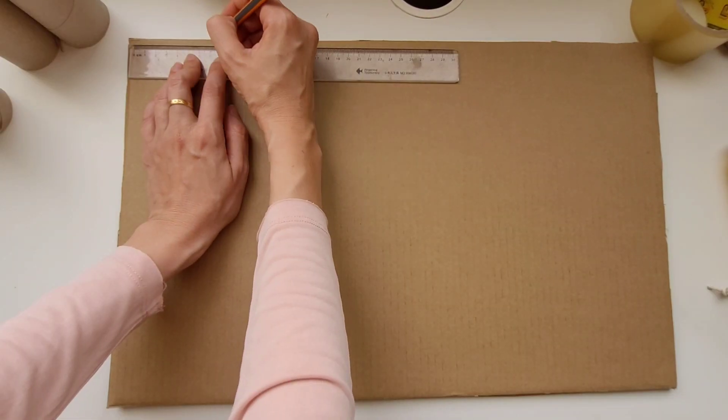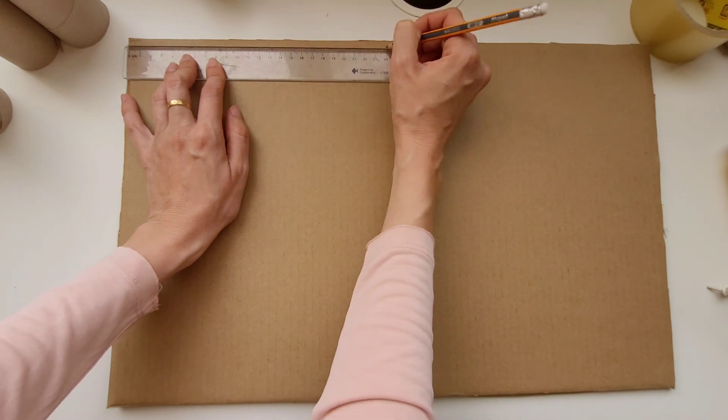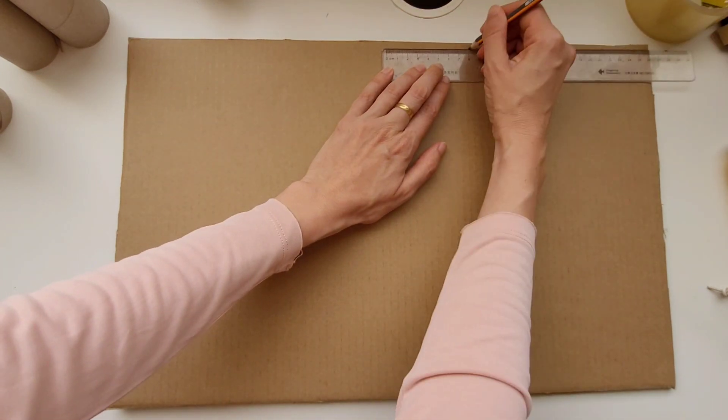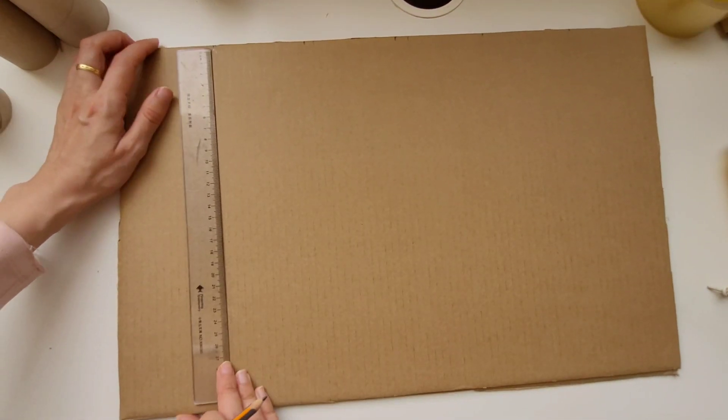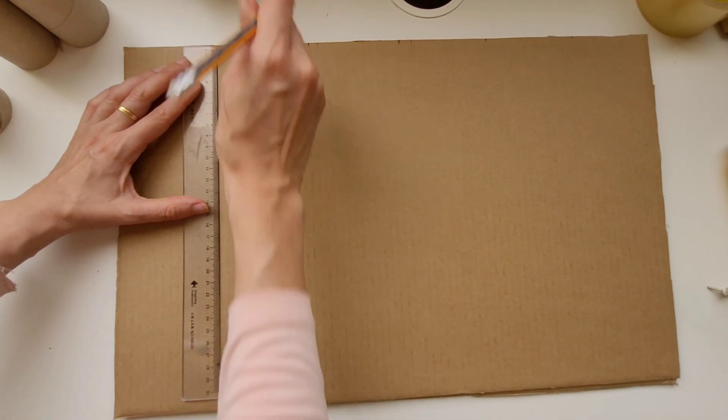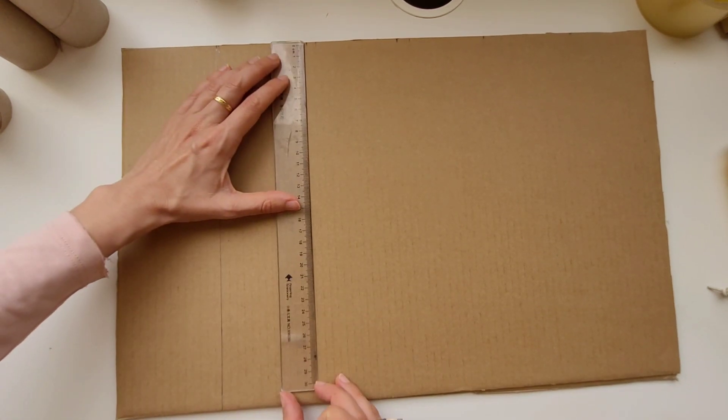To start out with, we're going to need two pieces of cardboard. After you get two pieces of cardboard that are exactly the same size, you're going to measure it into as many long strips as you want to.